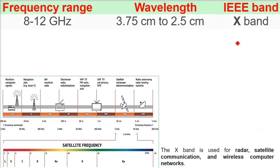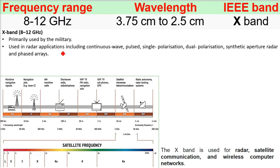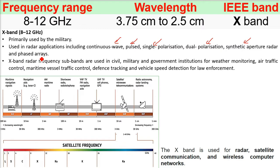Then we have 8 to 12, X band, 8 to 12. This is 3.75 centimeter to 2.5 centimeter. The wavelength is decreasing now, it has decreased up to centimeter. X band, 8 to 12 gigahertz, primarily used by military. It is used in radar radar application including the continuous wave, pulse, single polarization, dual polarization, synthetic aperture radar and the phased array. X band radar frequency sub-bands.